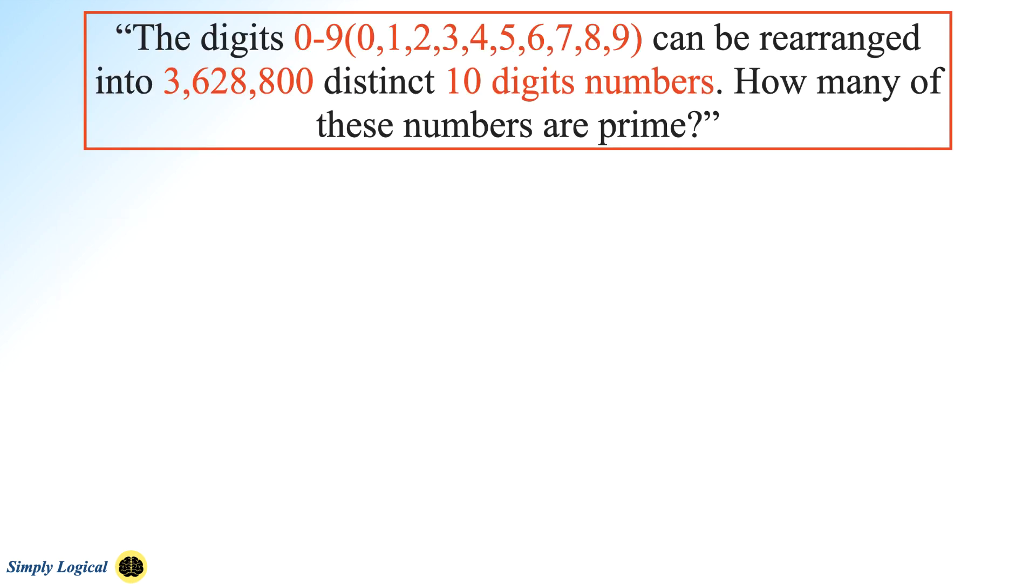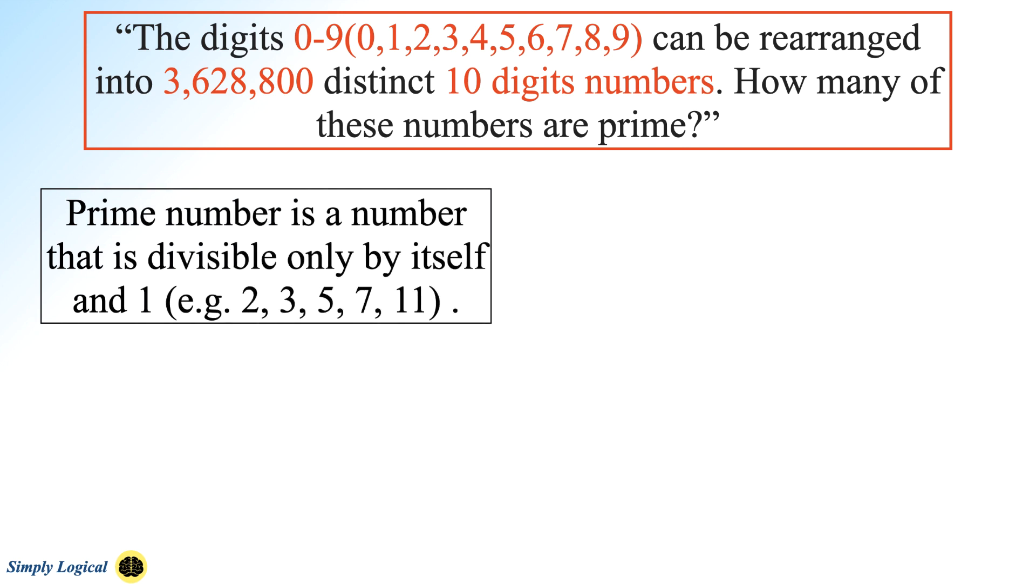Let me elaborate the problem. First of all, it is important to understand what are prime numbers. Basically, a prime number is a number that is divisible only by itself and 1. Examples are 2, 3, 5, 7, 11, etc.